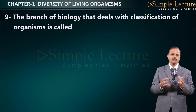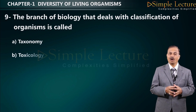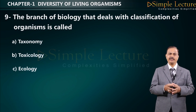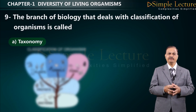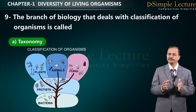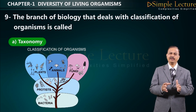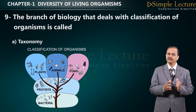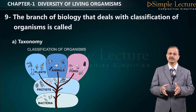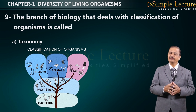Question number nine: the branch of biology that deals with classification of organisms is called — options are A: taxonomy, B: toxicology, C: ecology, D: ethology. The correct answer is A: taxonomy. Classification is based on morphological similarities, dissimilarities, and phylogenetic properties, and includes five major kingdoms: Monera, Protista, Plantae, Animalia, and Fungi.